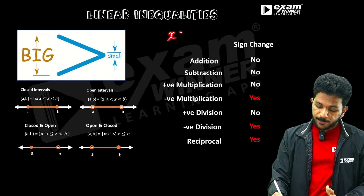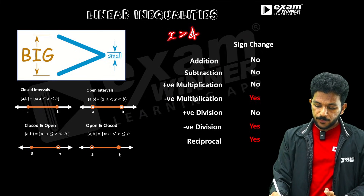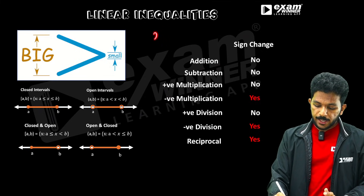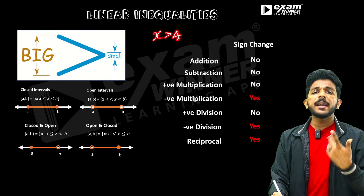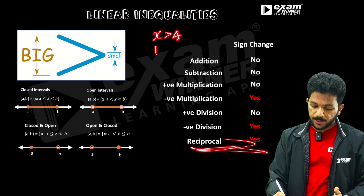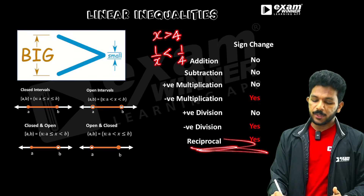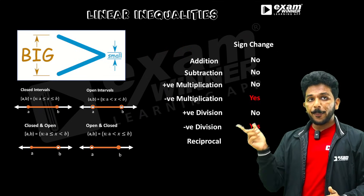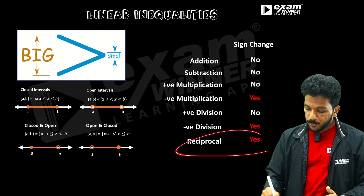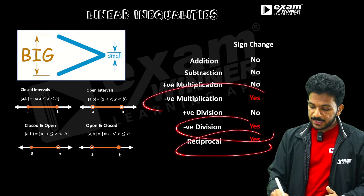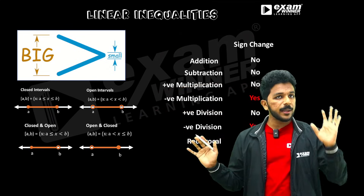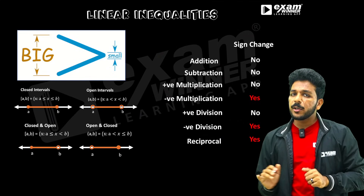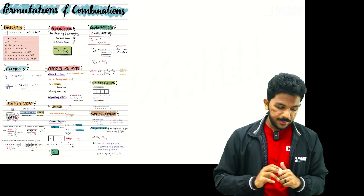For example, x is greater than 4. If you take the reciprocal — upside down — then 1/x is less than 1/4: the sign changes. Opposite sign when taking the reciprocal. There is no other rule — linear inequalities equals the other chapter.